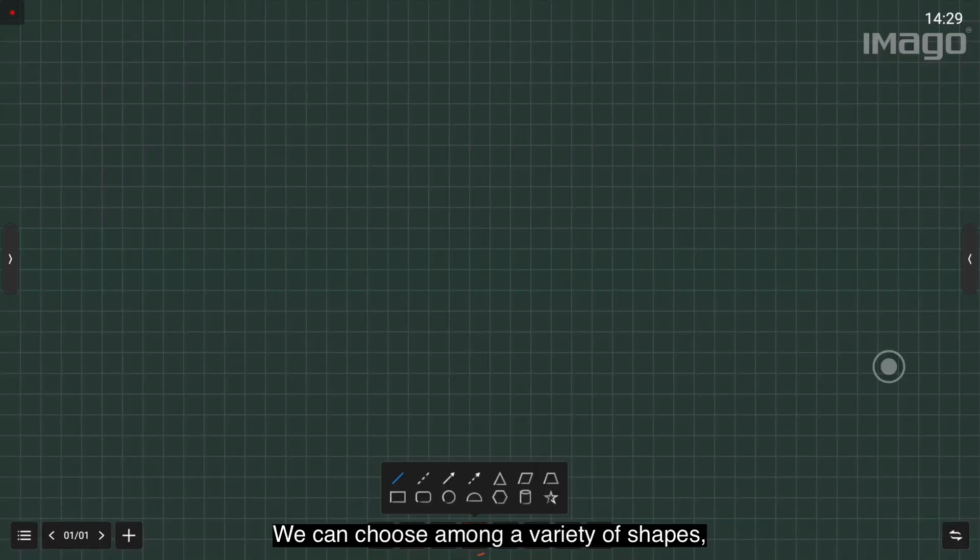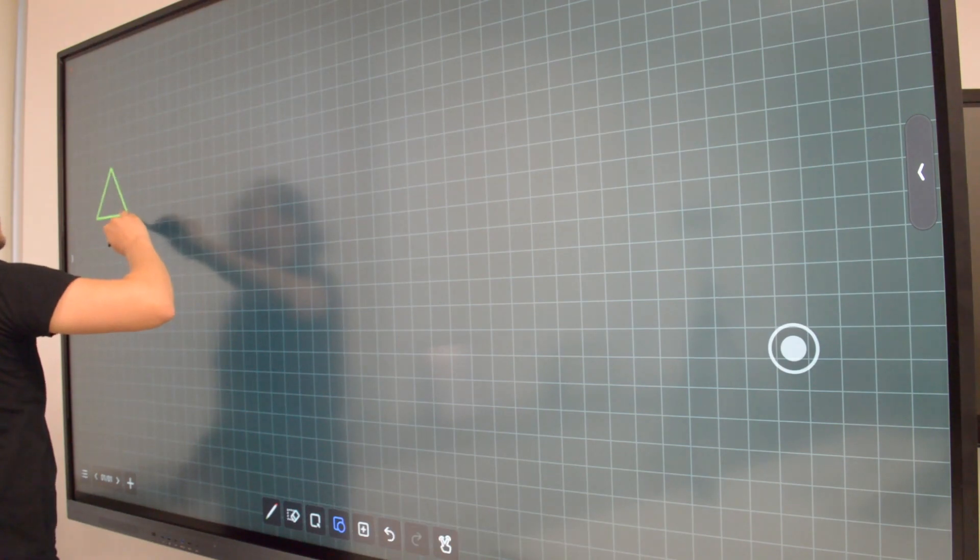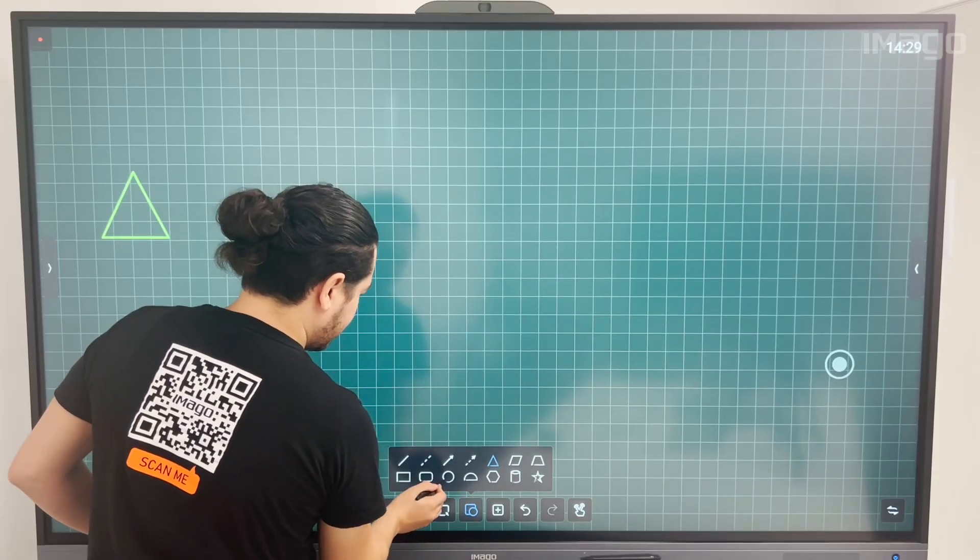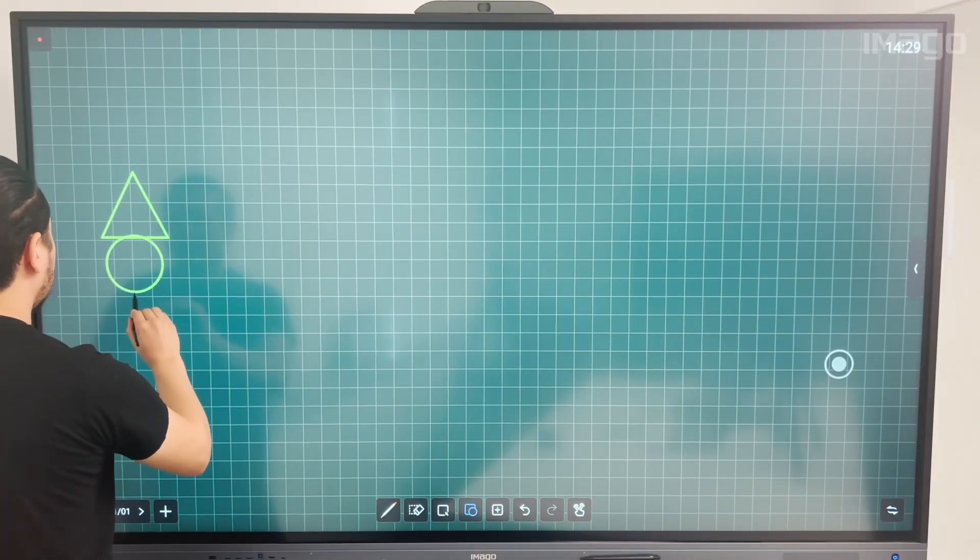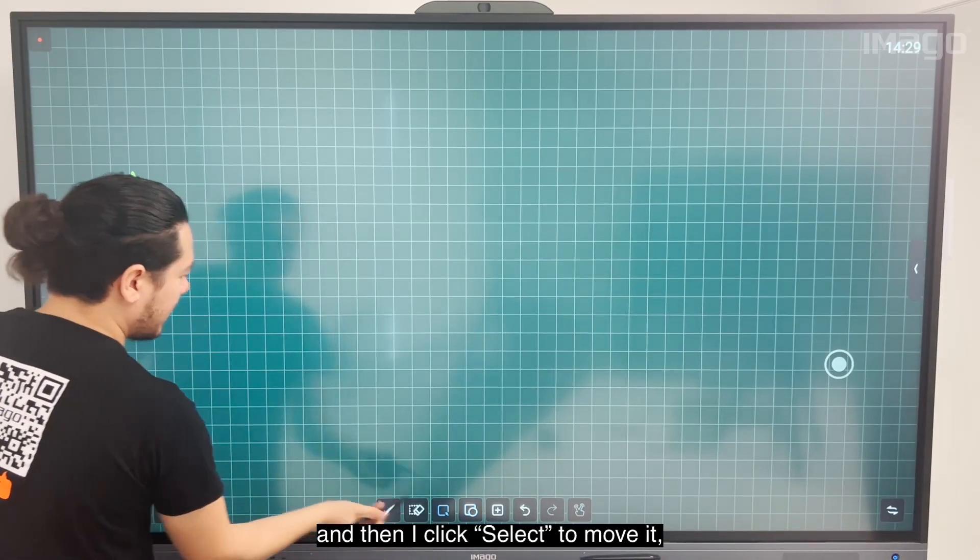Now we have Shapes. Here we can choose among a variety of shapes, for example a triangle or a circle. Then I click Select to move it.